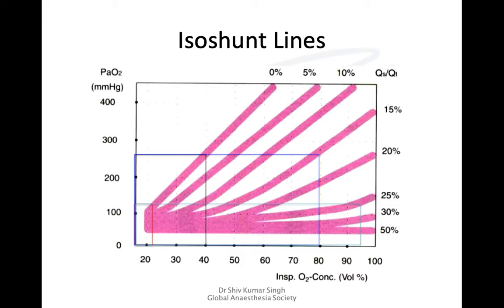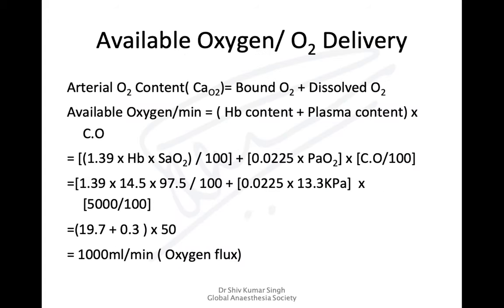Once the shunt exceeds 25 percent — more than one quarter — you can see that even trying to achieve a normal pO2 requires very high oxygen concentrations. Once shunts are at 50 percent, whatever you do will not improve paO2 at all. You need to look at the reasons for shunting: in children it may be cardiac lesions; in adults it may be large amounts of alveolar collapse or bronchopneumonia. You need to treat the underlying cause.